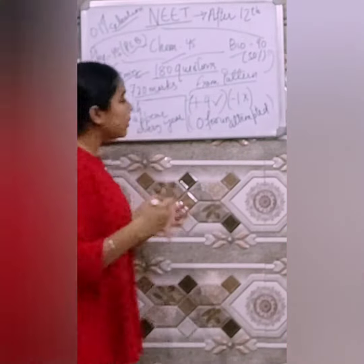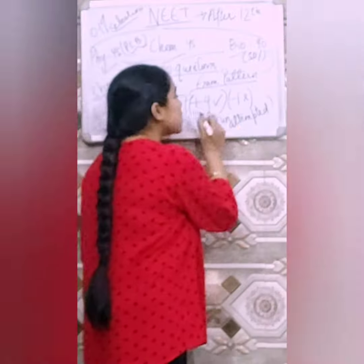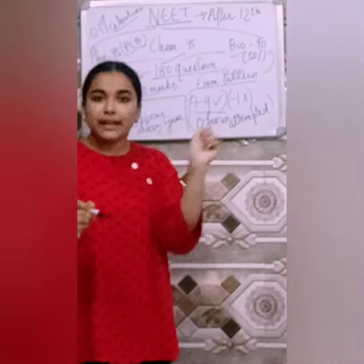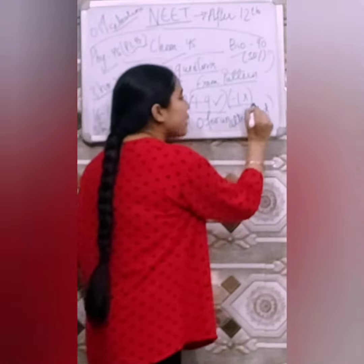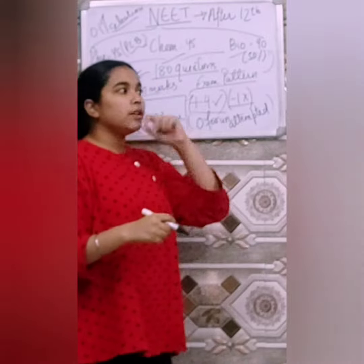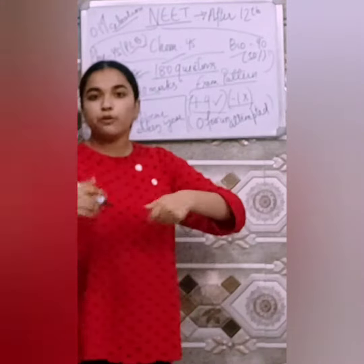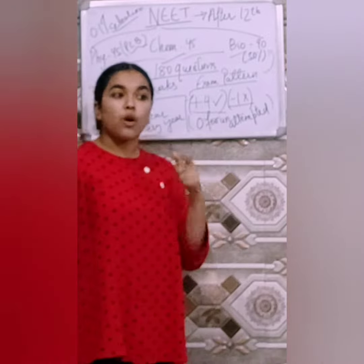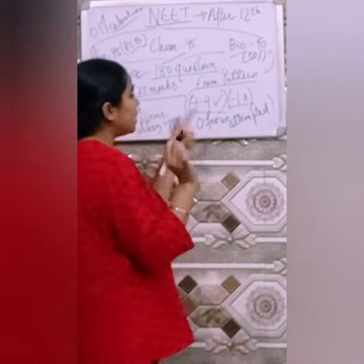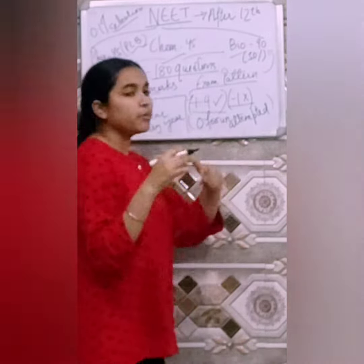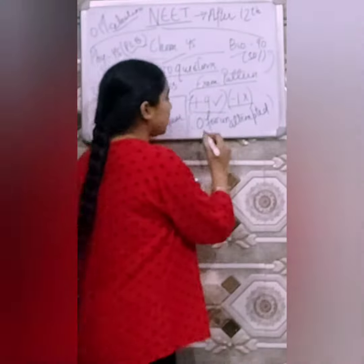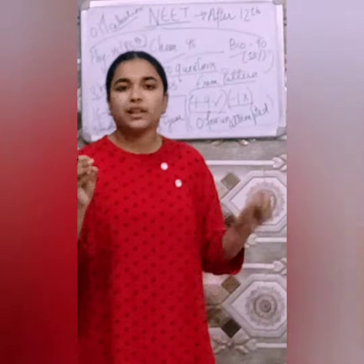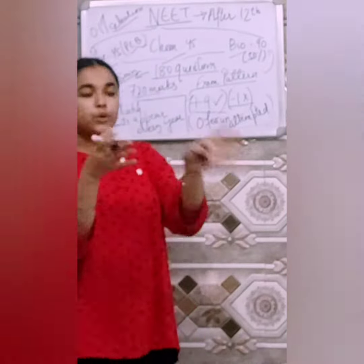There is a very important thing that you have to understand. You are going to get plus 4 marks for every correct answer. There is negative marking — minus 1 if you have bubbled or circled a wrong answer on the OMR sheet, then minus 1 will be deducted from your total. And zero marks for leaving the question unattempted.